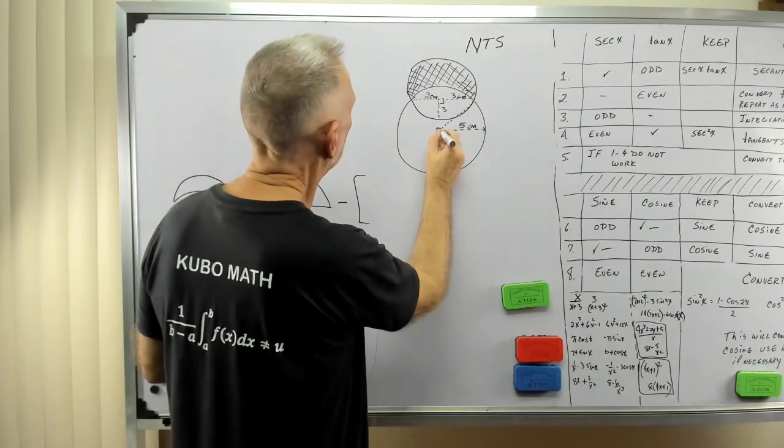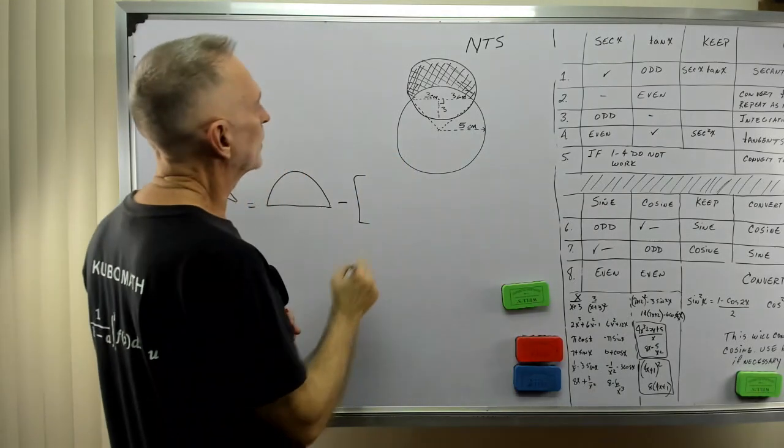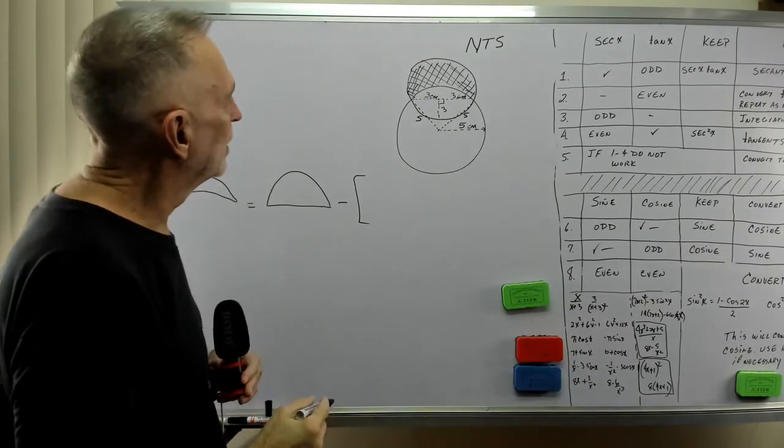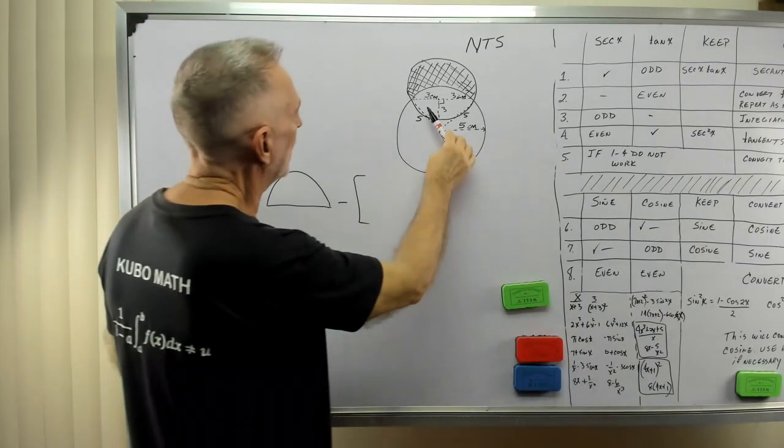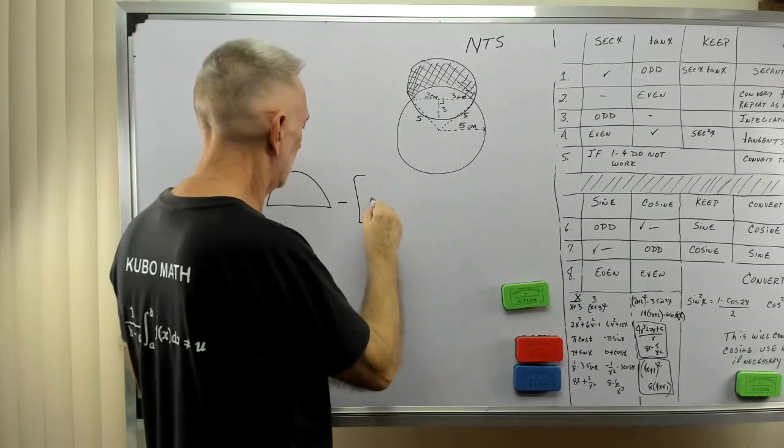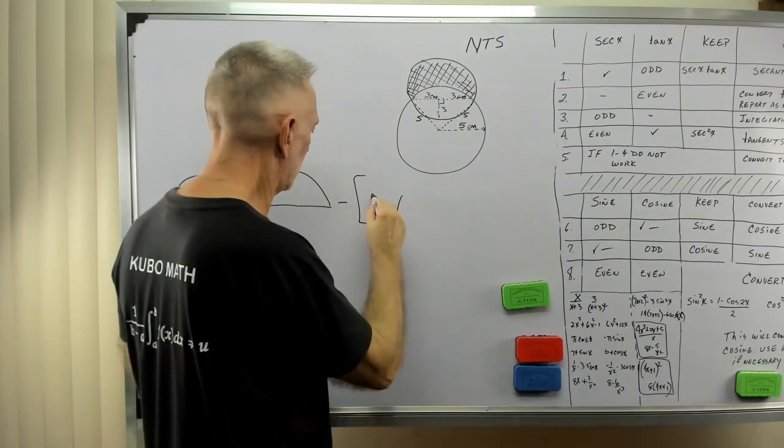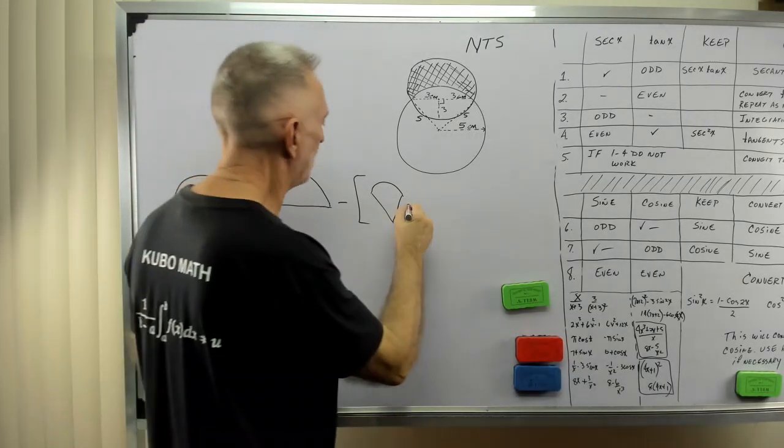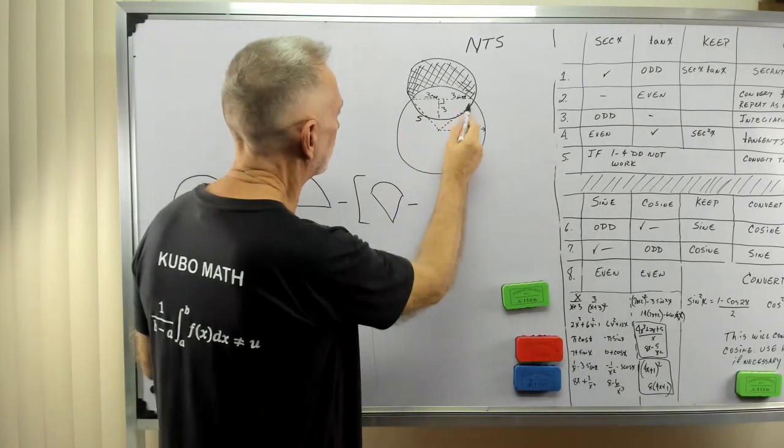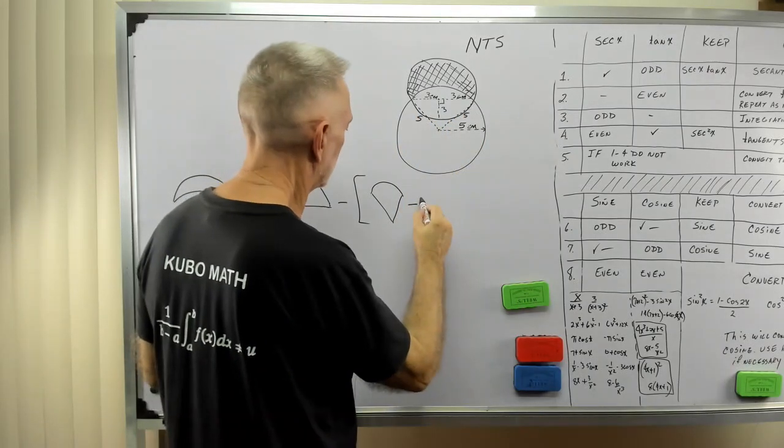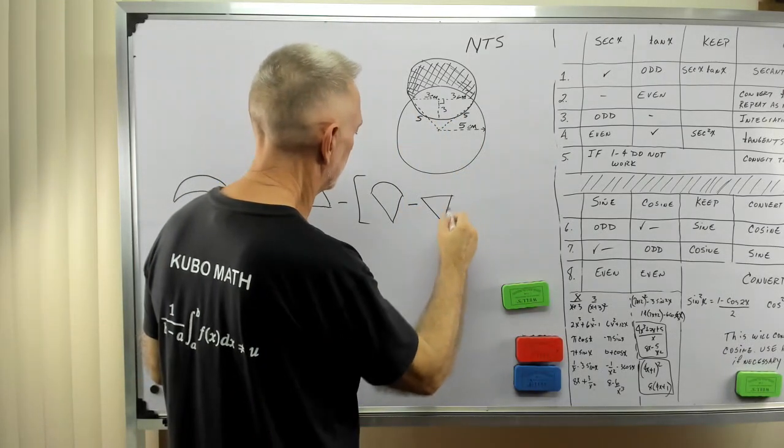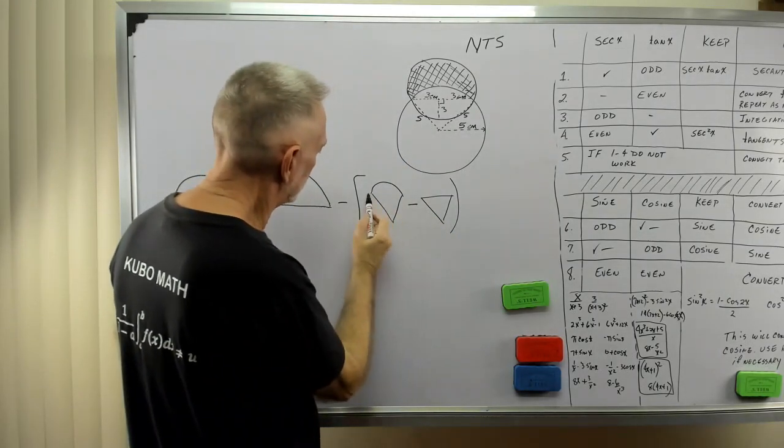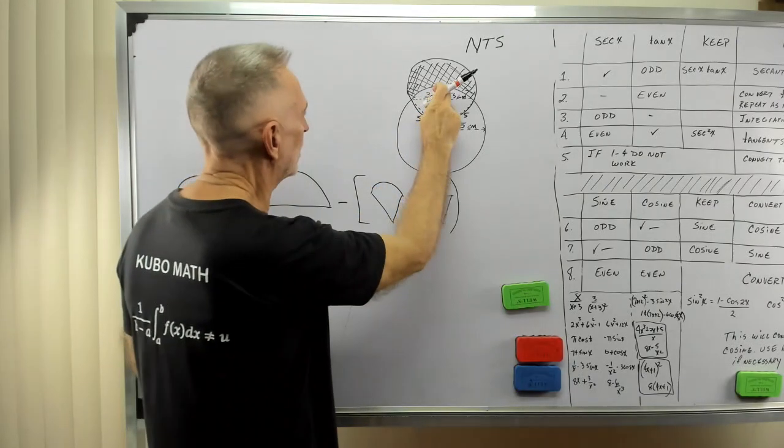If I were to draw a line right to that point, what is the length of that line? It's the radius of that larger circle. Same here. So I know the length of that line, and the length of this line, they're five. So now I have a sector. I have something that looks like a pie.